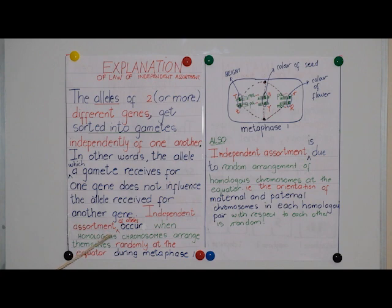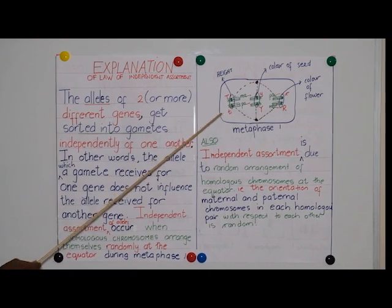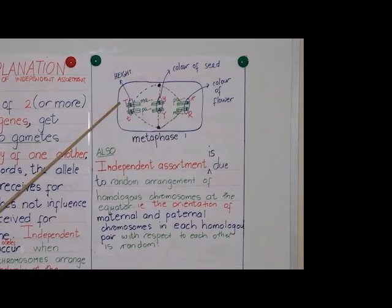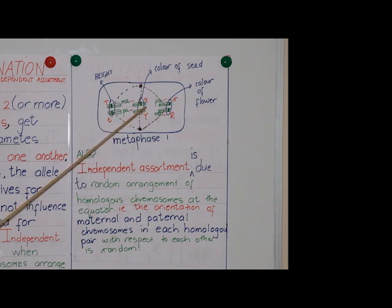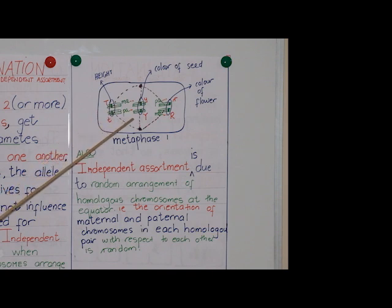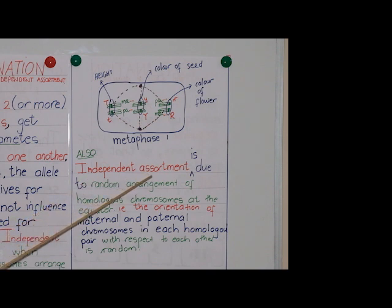Independent assortment of alleles occurs when homologous chromosomes arrange themselves randomly at the equator during metaphase. This diagram shows different genes for each characteristic: a gene controlled by two alleles for height, a gene controlled by two alleles for the colour of seed, and a gene controlled by two alleles for the colour of the flower. The type of allele which a gamete receives for height does not depend on the type of alleles the gamete receives for colour of seeds or colour of flowers. Also, independent assortment is due to random arrangement of homologous chromosomes at the equator.